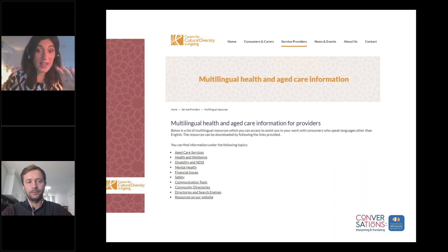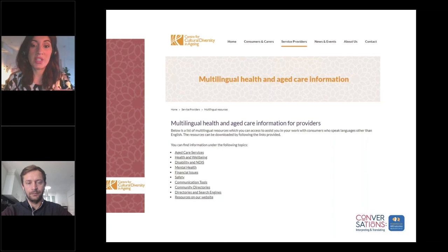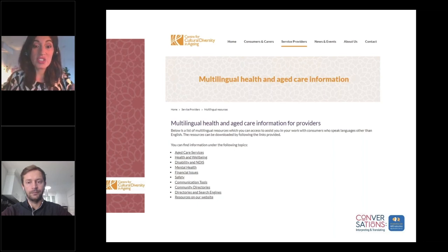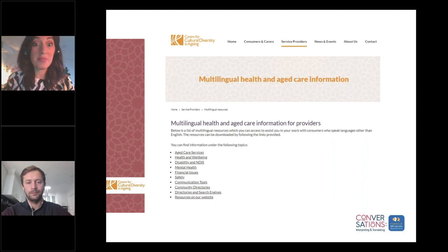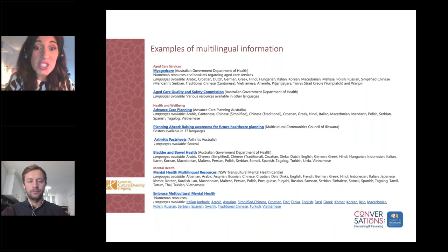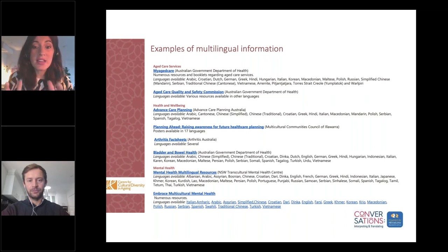The Centre for Cultural Diversity and Ageing has a website where, under the service providers tab, you'll find multilingual health and aged care information — a wide range of multilingual resources in one place. You can explore topics in aged care and help your consumer find information like My Aged Care, which is translated in many different languages, as well as costs and fees, the Aged Care Act, and the Charter of Rights in different languages. The Australian Government Department of Health has translated information about My Aged Care into many languages, including Aboriginal and Torres Strait Islander languages.